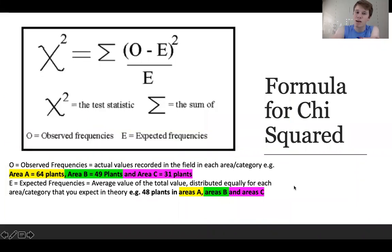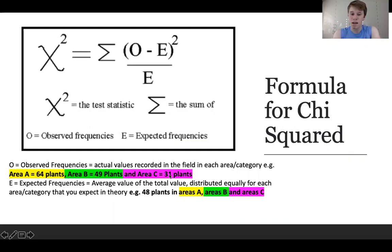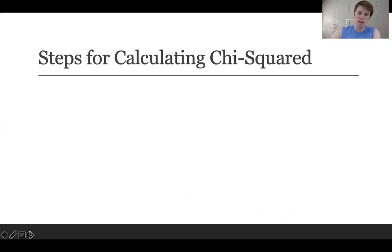This is the formula for calculating chi-squared: χ² = Σ(O - E)² / E, the sum of observed minus expected squared, over expected. It looks complicated but it really isn't. O is the observed frequency — the actual value recorded in the field. For example, area A had 64 plants, area B had 49 plants, and area C had 31 plants. The expected frequency E is the average of the total values, assuming an equal number of plants distributed between each area, because chi-squared is based on the null hypothesis of equal distribution.